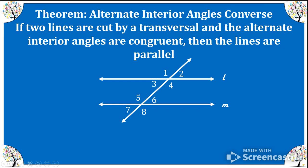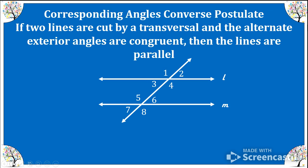Let's write the theorem: alternate interior angles converse. The converse is the opposite of proving angles are congruent — it says if two lines are cut by a transversal and the alternate interior angles are congruent, then the lines are parallel. So if angles 3 and 6 are congruent, the alternate interior angles converse says lines L and M are indeed parallel. Similarly, the corresponding angles converse postulate: if corresponding angles like angles 1 and 5 are congruent, then lines L and M are indeed parallel.